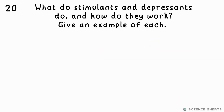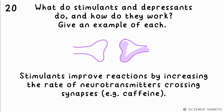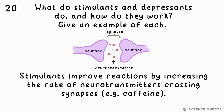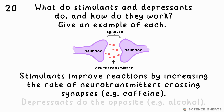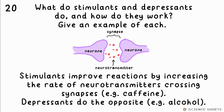What do stimulants and depressants do and how do they work? Give an example of both. A stimulant will decrease your reaction time or improve your reactions — it increases the rate at which neurotransmitter chemicals are released across the synapses between neurons. An example would be caffeine. A depressant does the opposite: it impairs your reactions by reducing the amount of neurotransmitters crossing the synapse. An example is alcohol.